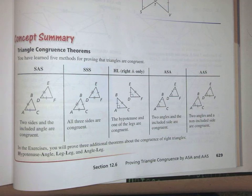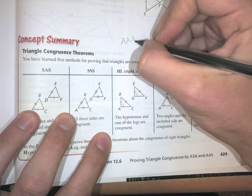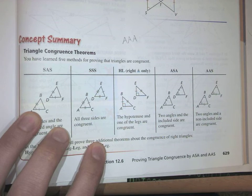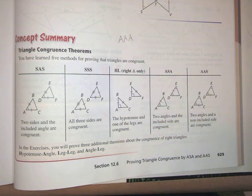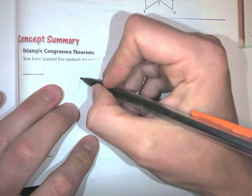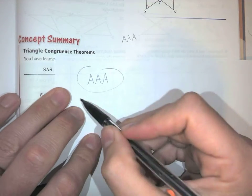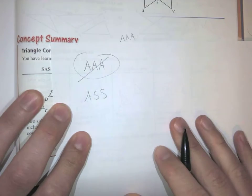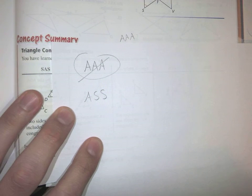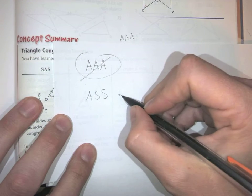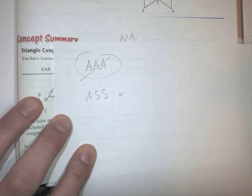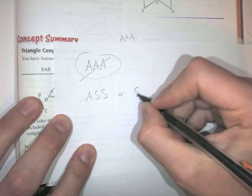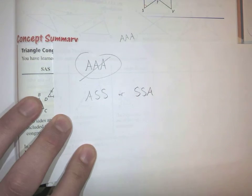Let's talk about what we don't have — what is NOT a congruence theorem. One is angle-angle-angle: if you have three congruent angles, you can't necessarily say the triangles are congruent. Another one is angle-side-side — that one doesn't work. There's a special case where if you have a right triangle this works, but only in right triangles, which we'll save for later. Most books don't write it as SSA for obvious reasons, because that spells something else. So don't use that one.